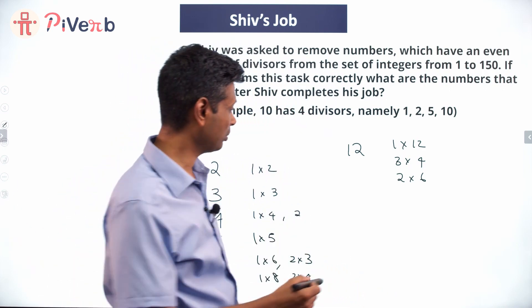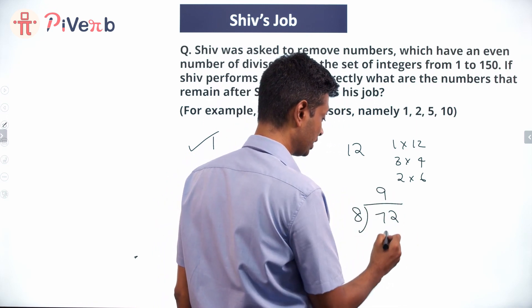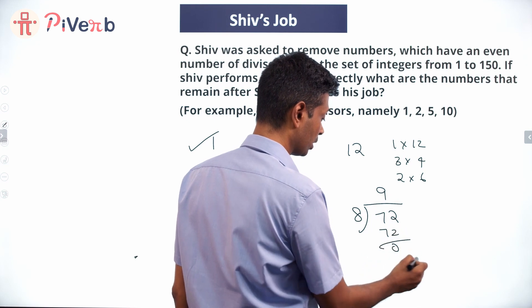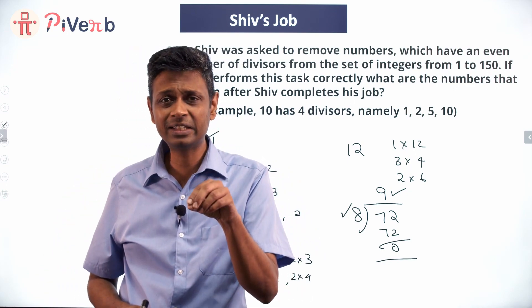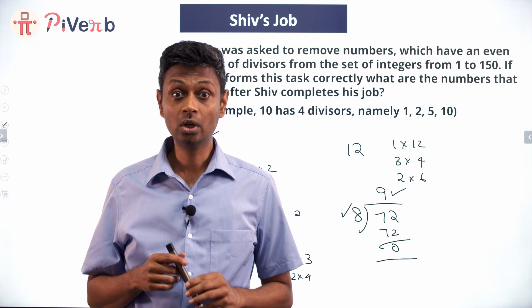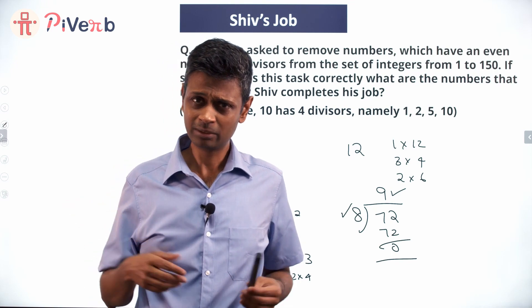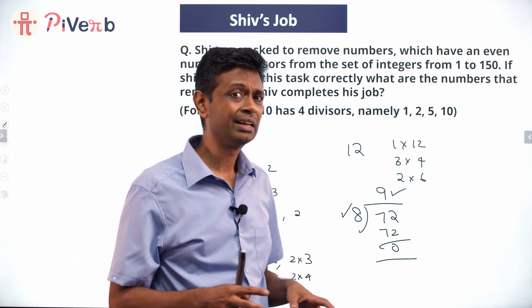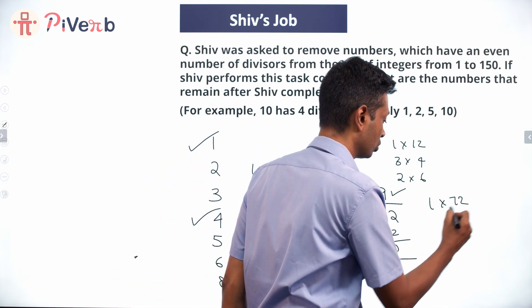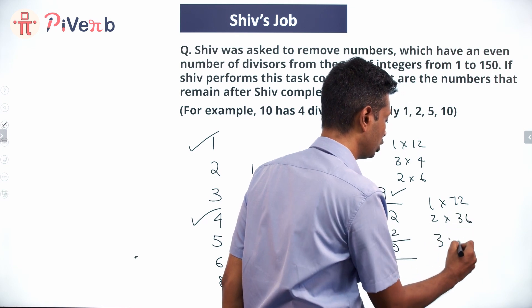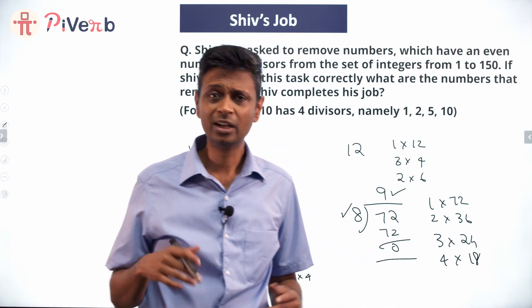Take a number like 72: divide by 8, the quotient is 9. If 8 is a factor, 9 is also a factor — every time 8 divides 72, 9 also divides 72. So factors are gathered in pairs. For 72: 1×72, 2×36, 3×24, 4×18, 6×12, etc. You have one factor, you've got the paired factor. So all numbers have an even number of factors — except that's not always the case.